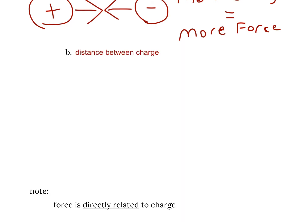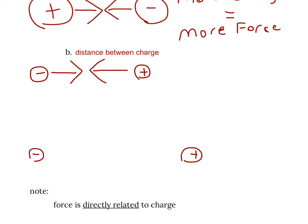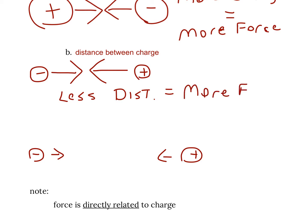Force is also dependent on the distance between the charges. In this example, all objects have the same size charge — the only difference is the distance. In the top set, they're pretty close together. In the bottom set, they're far apart. If you have less distance, there's more force. If there is more distance, there's less force.